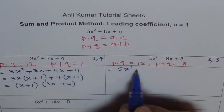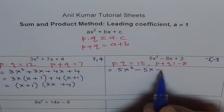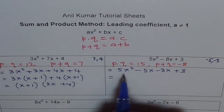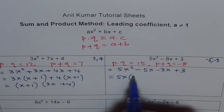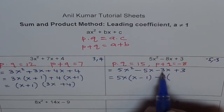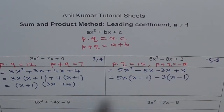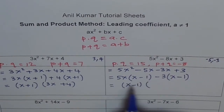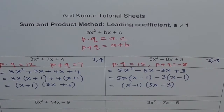We follow the same process: decompose minus 8x with minus 5x and minus 3x, giving 5x squared minus 5x minus 3x plus 3. Combine the first two terms and factor out 5x, leaving 5x times (x minus 1). For the last two terms, factor out minus 3, which gives minus 3 times (x minus 1). Then factor out the common (x minus 1), leaving 5x from the first term and minus 3 from the second. So the factored form is (x minus 1)(5x minus 3).